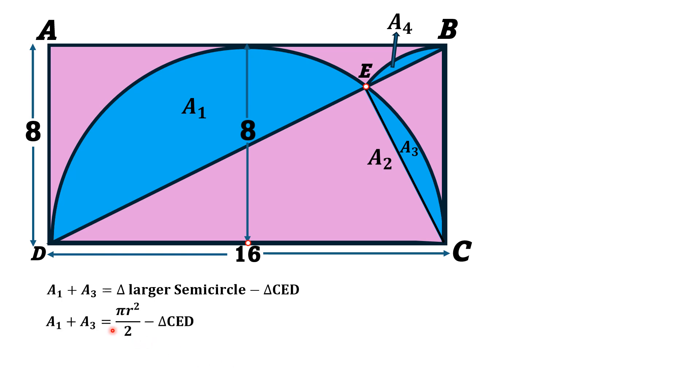Area of the larger semicircle is πr² over 2, and here radius is 8 units. So A1 plus A3 is equal to π times 8² over 2 minus area of triangle CED. From here, A1 plus A3 equals 32π minus area of triangle CED.